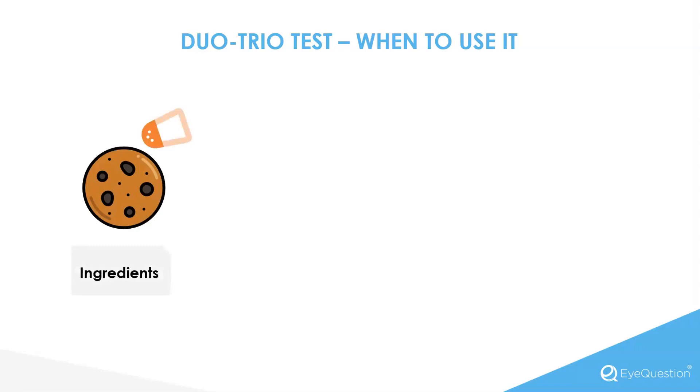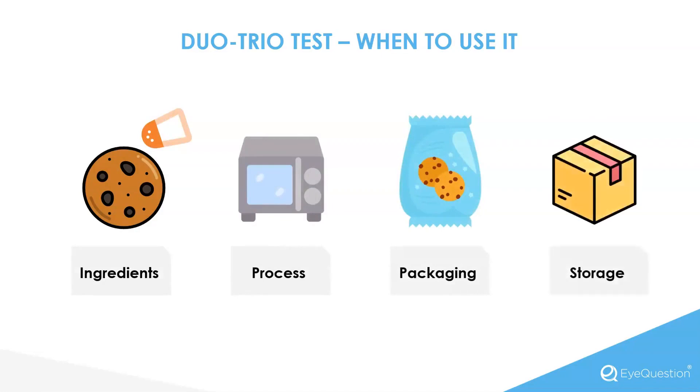Duo Trio testing is ideal for scenarios where a perceptible difference might exist due to changes in ingredients, processes, packaging or storage.